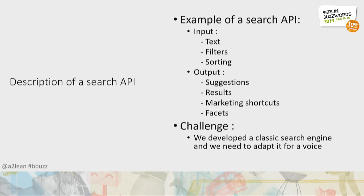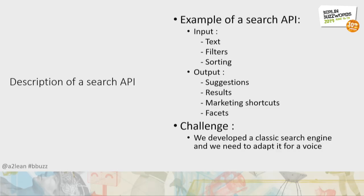Let's see how we tackle these challenges. A classical search engine needs an input — usually text — plus filters and sorting information. As output, it gives results, the first page of results, suggestions like 'did you mean?', facets — not just one but several — and additional information like marketing shortcuts that the admin has pushed into the results. This is how a classical search engine works.